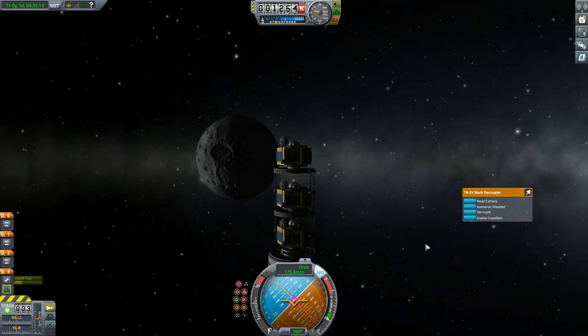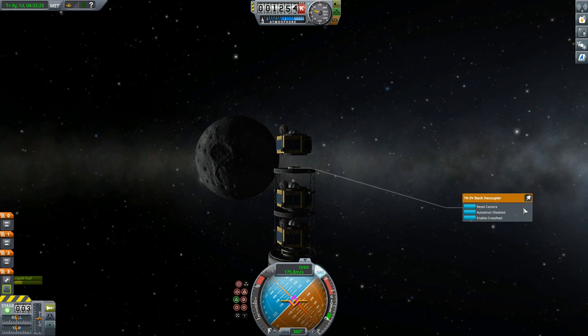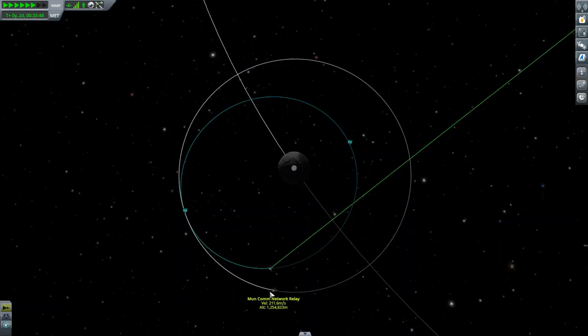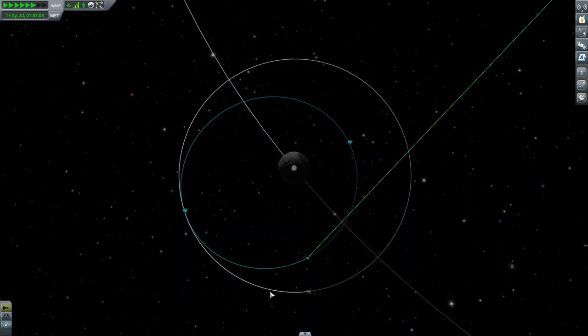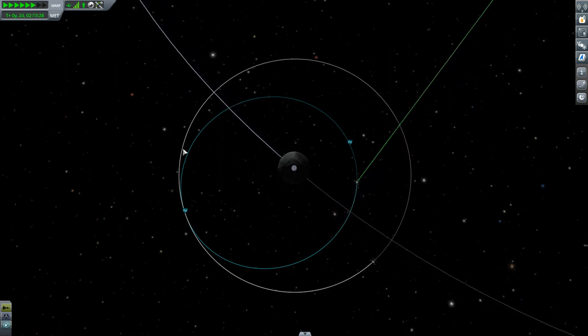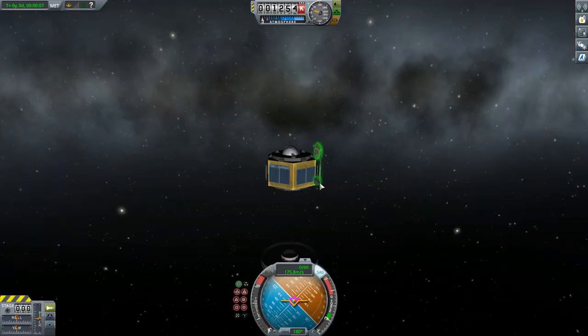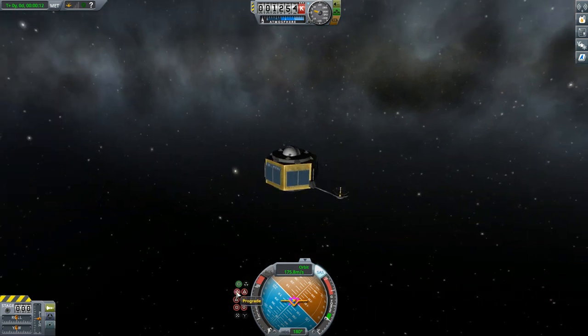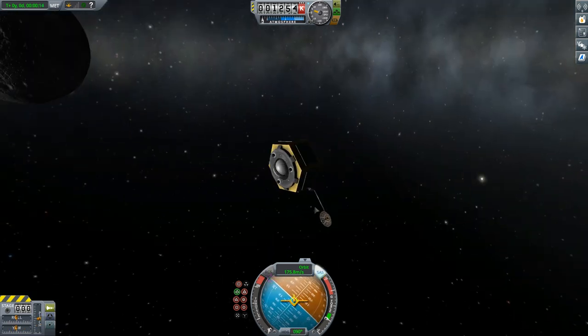Hi, this is Mike Abin here with some more KSP math. Today I want to calculate the ideal altitude for a communication network about the moon. For this video what I mean by an ideal network is a network that provides full coverage and good signal strength using only the most basic antennas in the game. The kind of thing you might build fairly early on in a career mode.